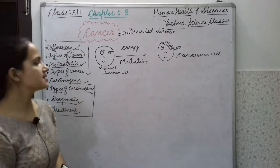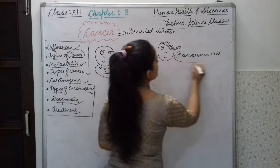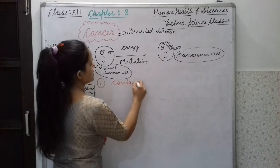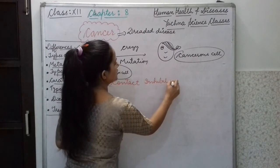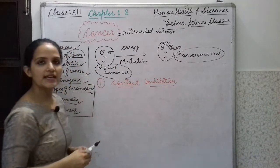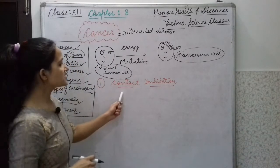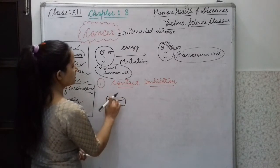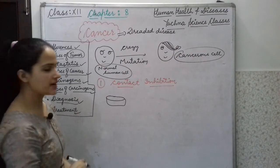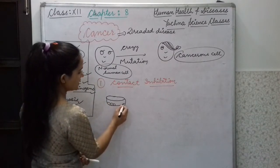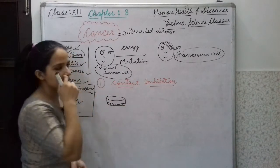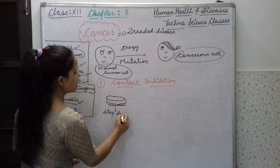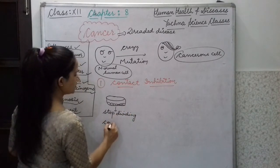Why do mutations happen? What are the changes? The first difference between normal human cells and cancer cells is based on the property of contact inhibition. Suppose we take a normal human cell in a petri dish in a lab. The cell starts to grow and cells from both sides grow until they touch each other, then they stop growing and stop dividing.